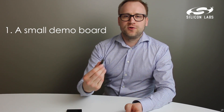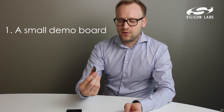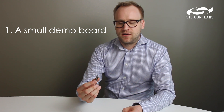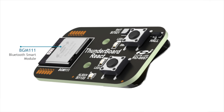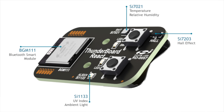The demo consists of three main pieces. It's the Thunderboard React board, powered by our BGM-111 Bluetooth Low Energy module. It also has a temperature and humidity sensor, an ambient light and UV index sensor, and a magnetic position sensor from Silicon Labs.